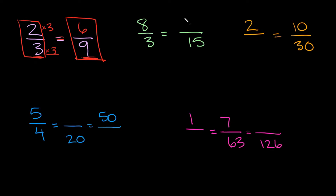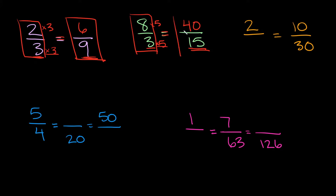All right let's do another one. We have eight over three is equal to something over fifteen. In this case we're trying to figure out how we get from three to fifteen. Well three times five is equal to fifteen, so we have to multiply by five. If we're going to multiply by five at the bottom we also have to multiply by five on top. So what's eight times five? That's forty. So eight over three is equal to forty over fifteen — these two fractions are equivalent.